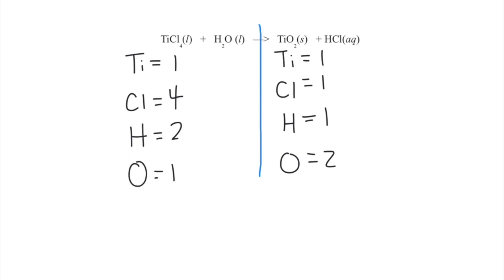To balance, what I'm going to do is change the coefficients — the numbers that come in front of a compound. If you don't see anything there, that just means there's a one. You can't change subscripts, so make sure you never change those. You just change the numbers in front. When we change the number in front, it's just algebra — it's going to multiply the subscripts by whatever that number is.